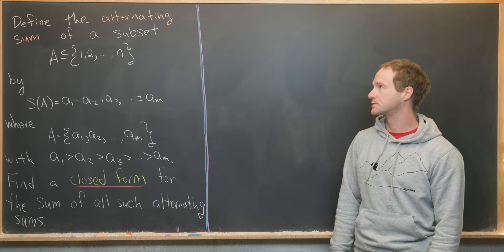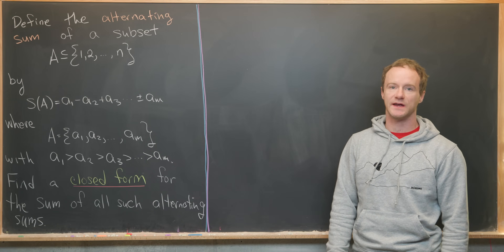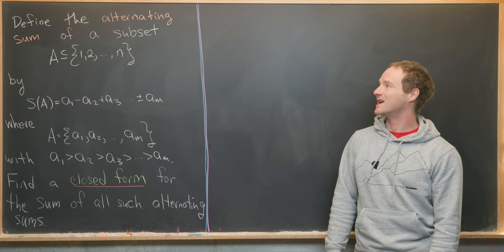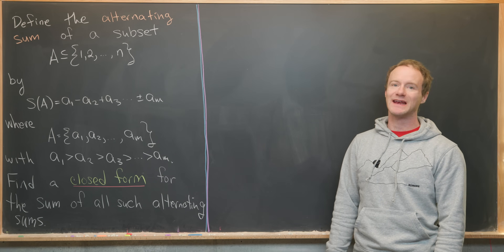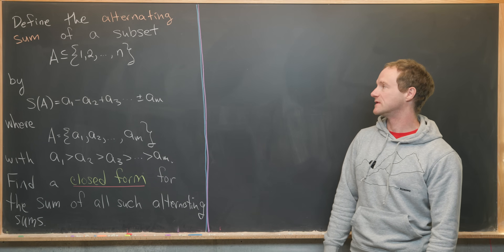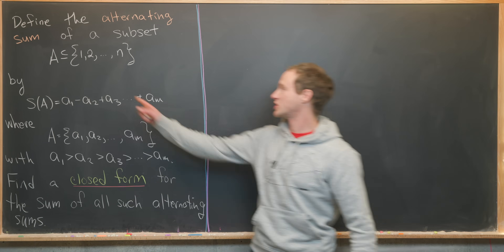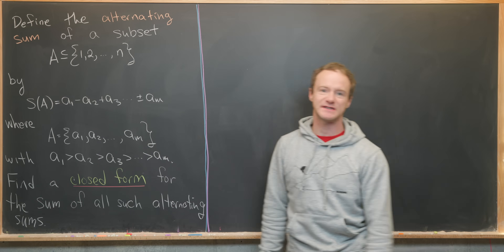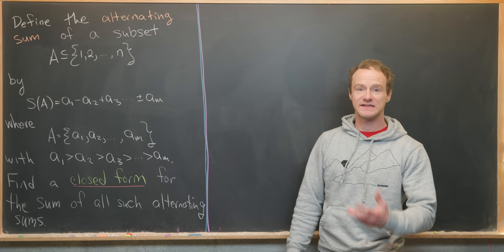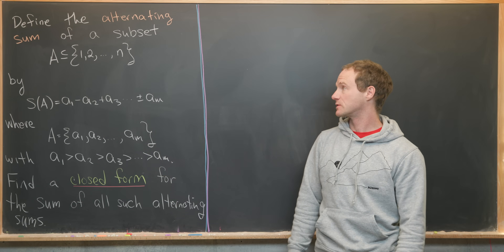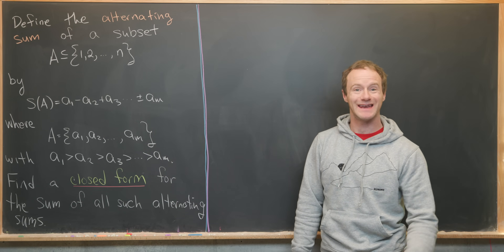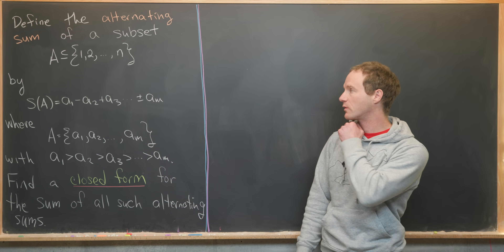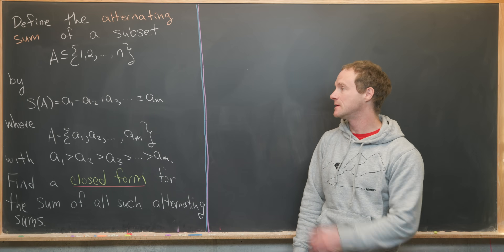I've got a nice combinatorics problem for you guys today. We want to define the alternating sum of a subset, which I'll call A, and it's a subset of the set of natural numbers between 1 and N — so 1, 2, 3, all the way up to N.